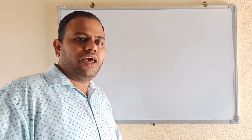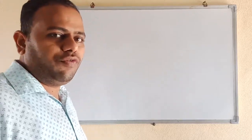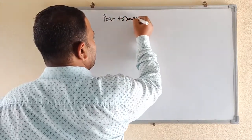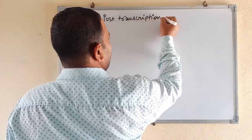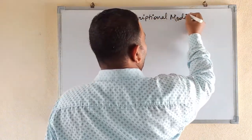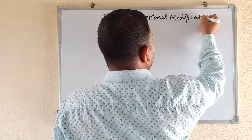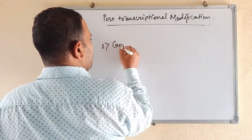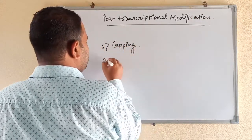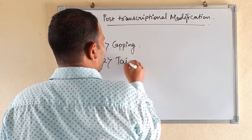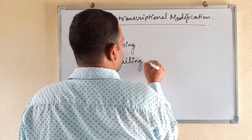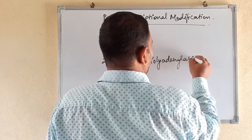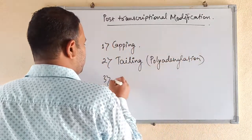Hello friends, welcome to the Biological Life Sciences channel. Today in this video we are going to see what is post-transcriptional modifications. There are three types of post-transcriptional modifications that we are going to see today: first is capping, second is tailing that is also called as polyadenylation, and then splicing.